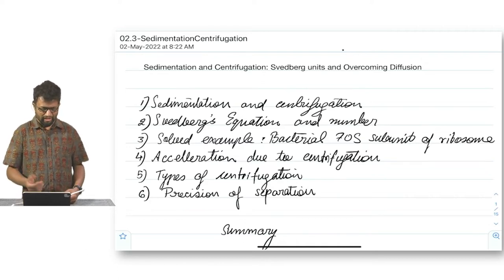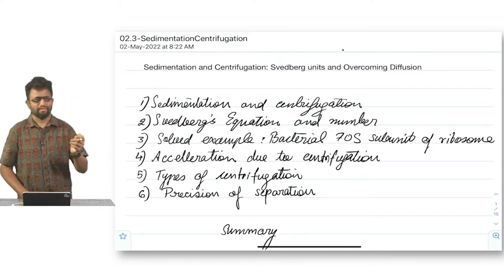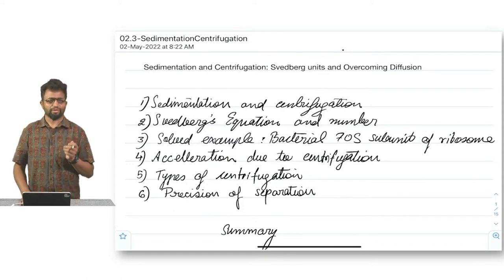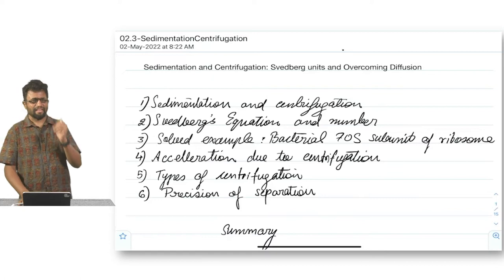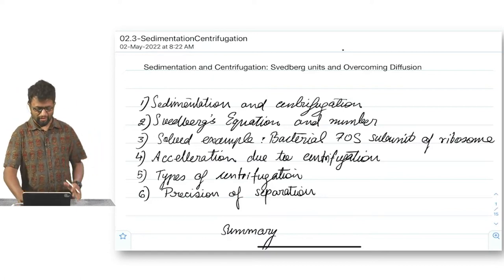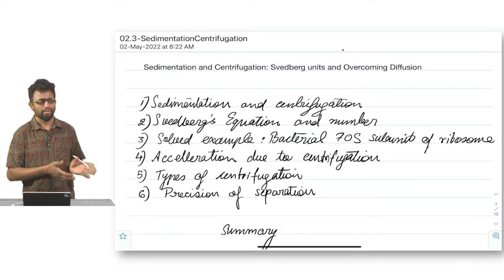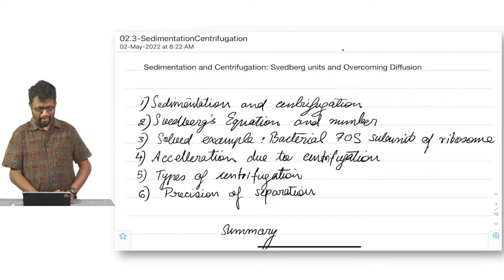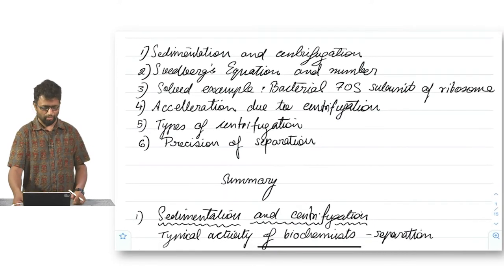We're going to cover sedimentation and centrifugation, Svedberg's equation and Svedberg's number. We'll use some solved examples. Many of you know that Venki Ramakrishnan's Nobel Prize was for solving the structure of the ribosome. The 70S bacterial ribosome - S stands for Svedberg units. We'll ask what does it mean. We'll then get to acceleration due to centrifugation, types of centrifugation, precision versus separation, and summarize this topic.